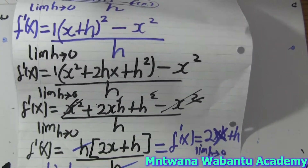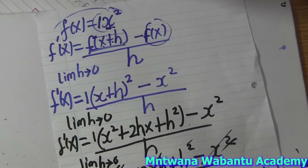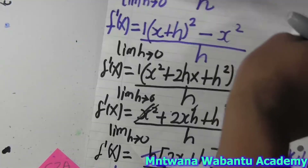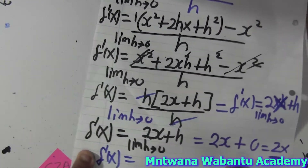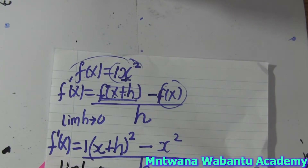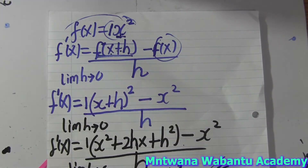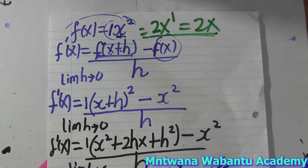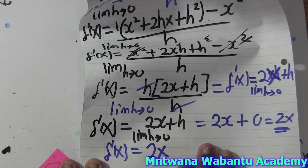So by using the first principle, f prime equals 2x. When you finish, make sure you check by doing normal differentiation — using the power rule, bring the 2 to the front, x to the power 2−1 = x¹, so you get 2x. If your answers match, you're correct. If not, you need to check your work.